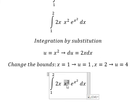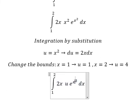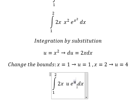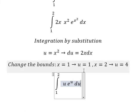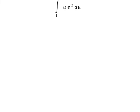Now we rewrite the integral: this part we replace with u, and 2s ds we replace with du. The lower bound stays as 1 and the upper bound changes to 4. Now we can use integration by parts.